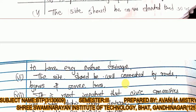The site should be well connected by roads, bypasses, and service lanes, etc., for transportation purposes. For example, in villages, roads are often not well developed, making transportation difficult. Therefore, the site should have roads, bypasses, and service lanes available so that one can travel from one place to another easily.